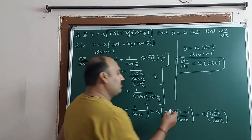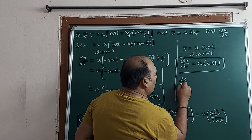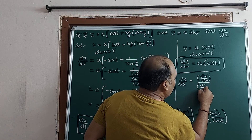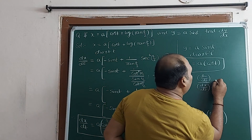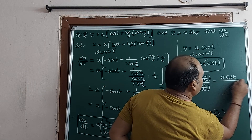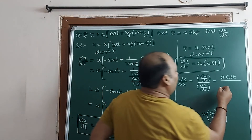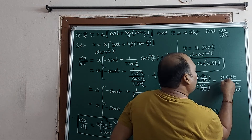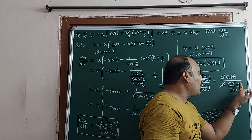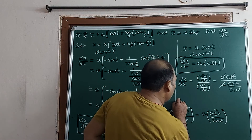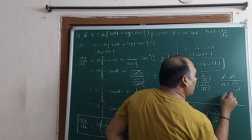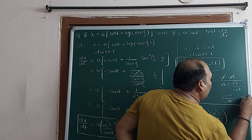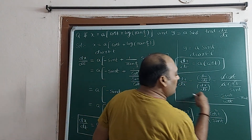Now dy/dx = (dy/dt) / (dx/dt). This is the formula — very important. dy/dt = a·cos t and dx/dt = a·cos²t / sin t. So dy/dx = a·cos t divided by (a·cos²t / sin t). The a cancels, one cos t cancels, leaving sin t / cos t, which equals tan t. Therefore dy/dx = tan t.